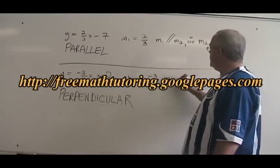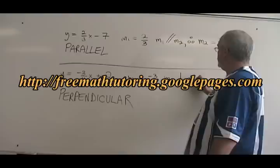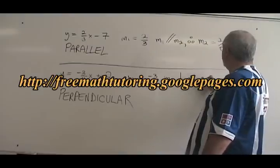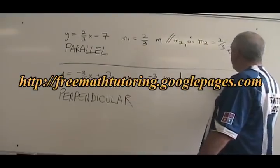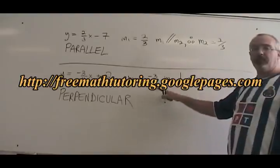We say m1 is perpendicular to m2. Therefore, m2 equals the negative reciprocal of m1.